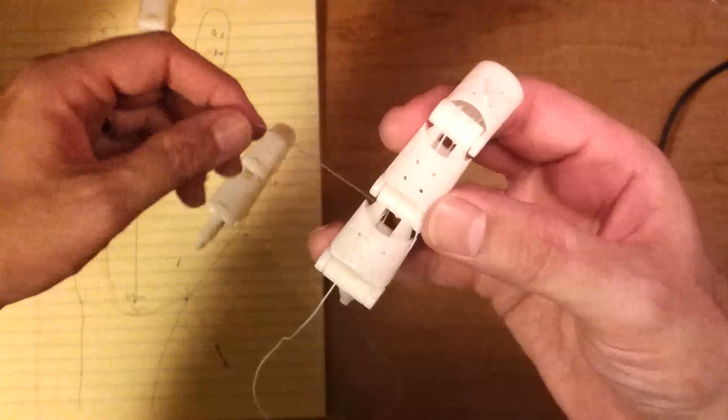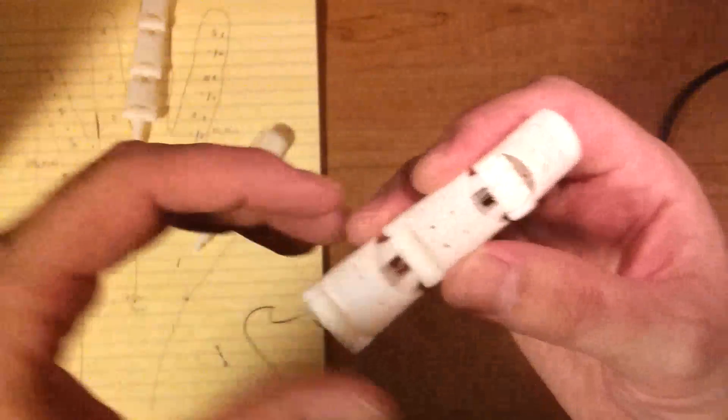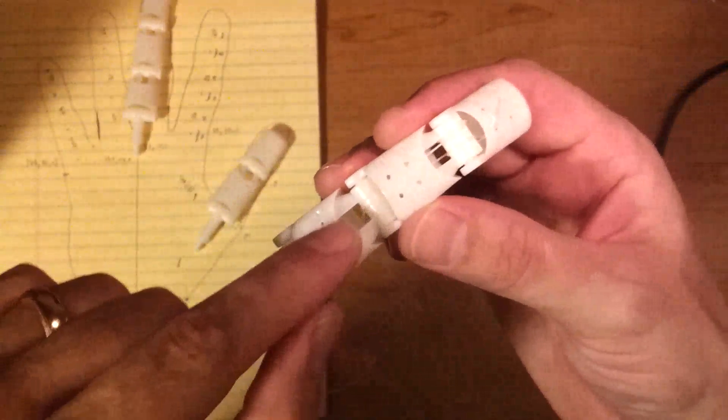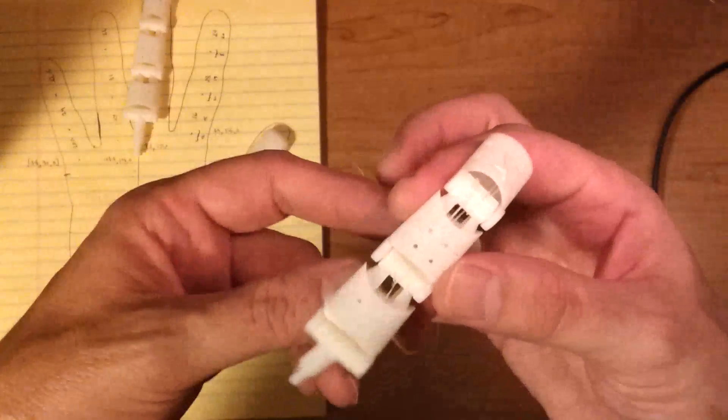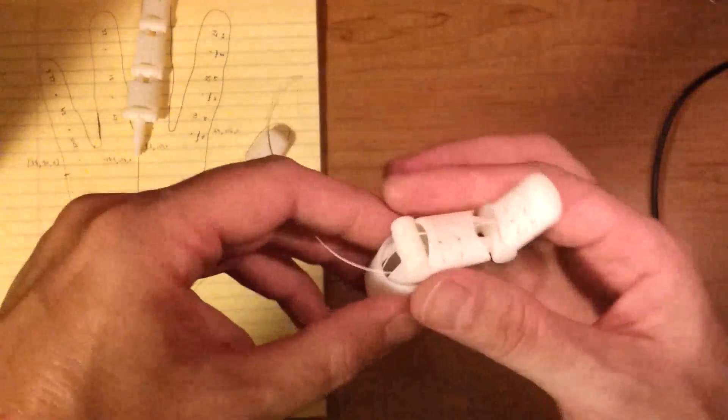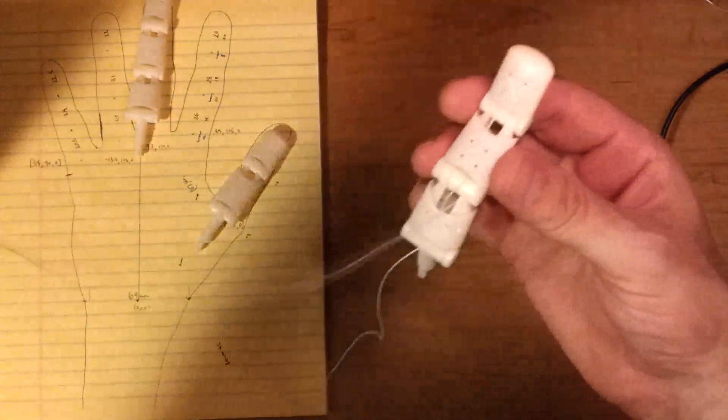So we've threaded that now down behind the pin joint. Turn that over, take the end and come over the pin joint, and that comes back out this side.